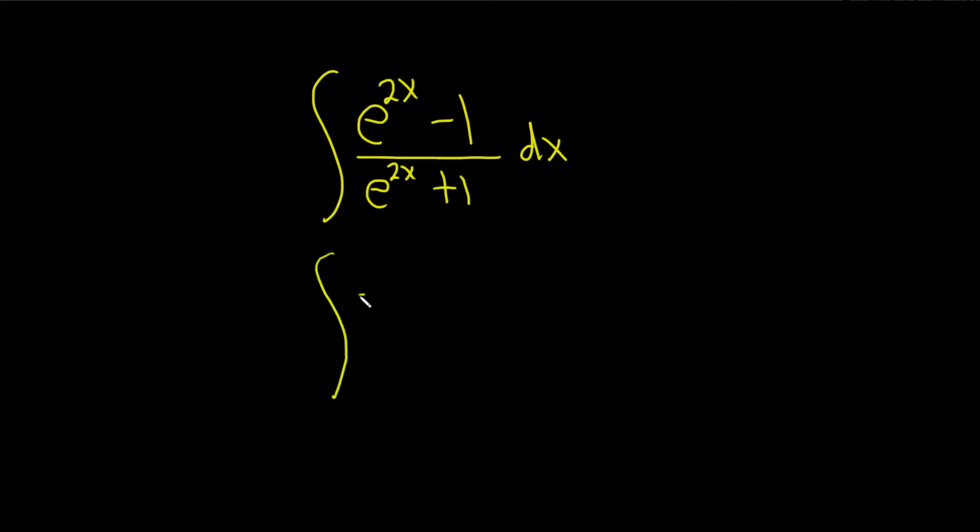So let's write it like this: e to the 2x minus 1 over e to the 2x plus 1. The 2 is really what's throwing things off. So I'm going to try to multiply by 1 in a clever way. Let's multiply by e to the negative x over e to the negative x. And something should occur here.